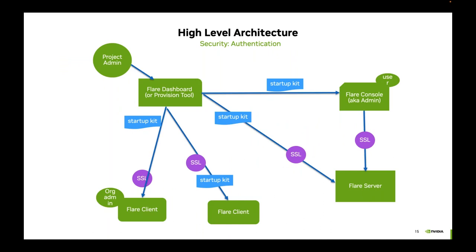This shows a high-level picture of the deployment architecture, and Steve will show what this looks like in his demo on AWS. At a high level, we have tools for project administration used for provisioning, either using the Flare dashboard or our built-in provisioning tool. This provisioning tool generates startup kits for each of the participants in the federation. These startup kits establish the identity of each participant, including certificates for secure authentication between clients and servers, and are used to establish the client and server processes that employ secure communication to execute federated learning workflows.